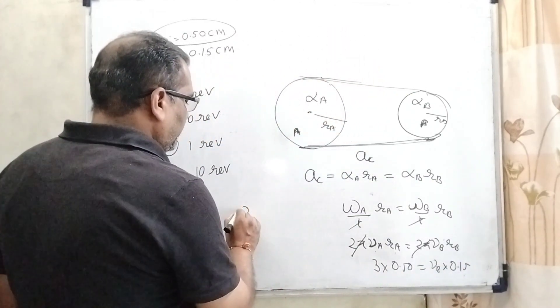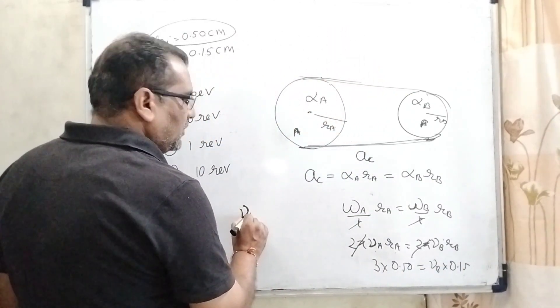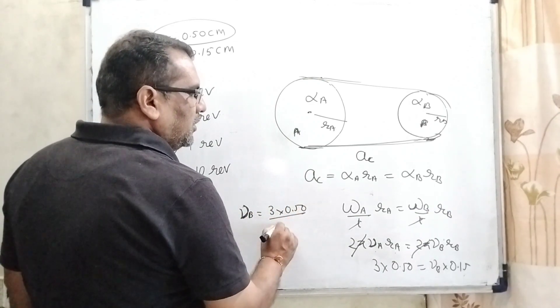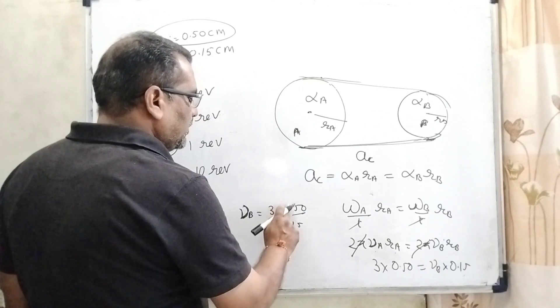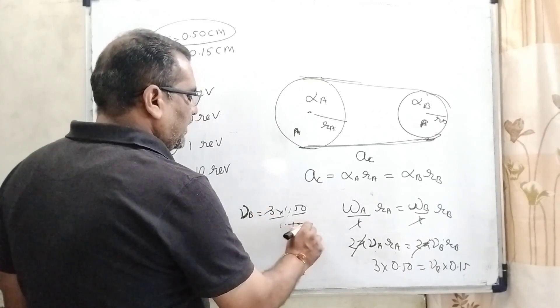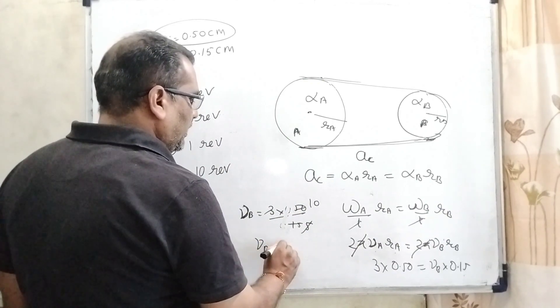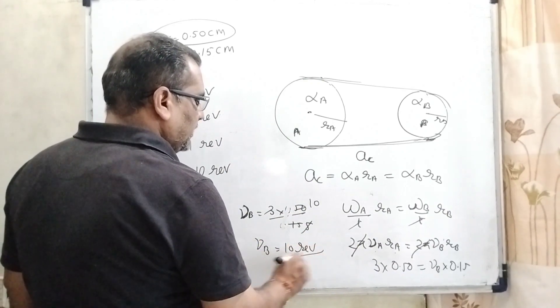Then nu B equals 3 into 0.50 divided by 0.15. The decimals cancel out. Then 3 times 5 divided by 15, which equals 10. So here, 10 revolutions is the correct answer.